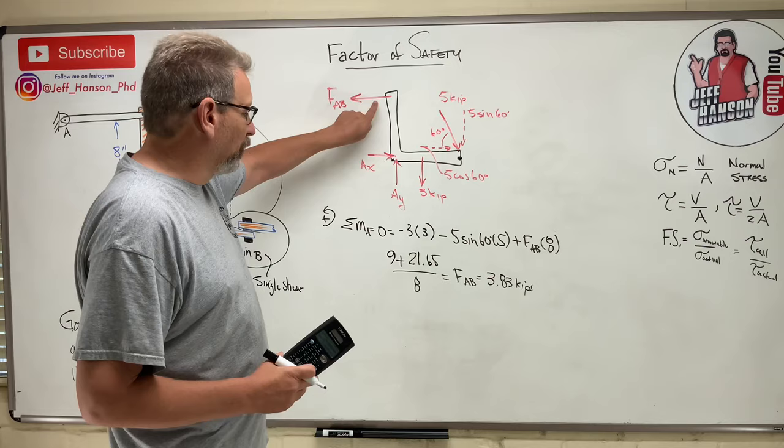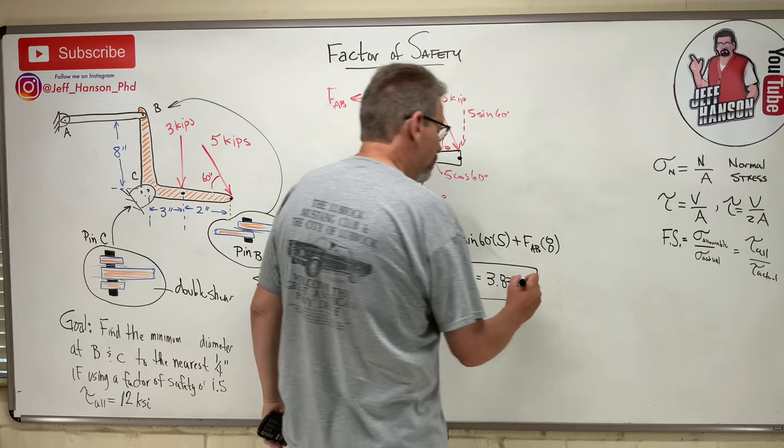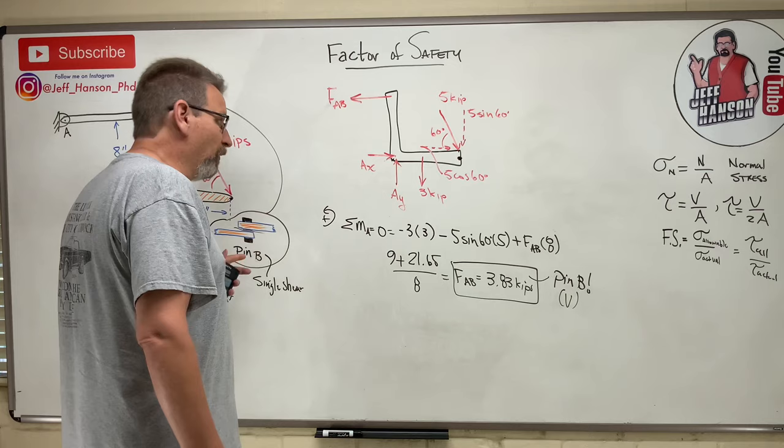We just found that F_AB is 3.83 kips. That is the force in member AB, and it is also the actual force applied to pin B - the thing pulling on pin B. So the pin B force V equals 3.83 kips. Now we need to find what's going on at pin A.